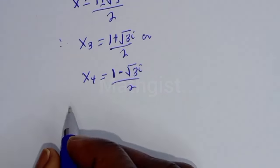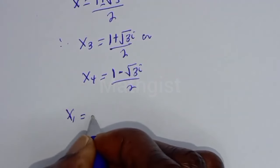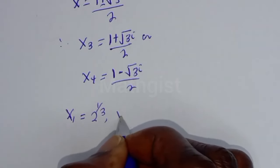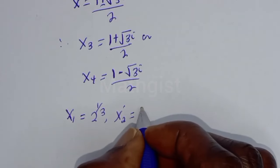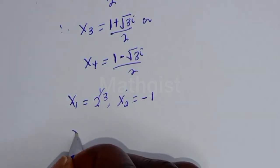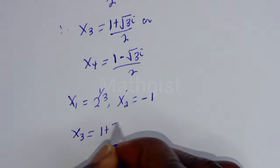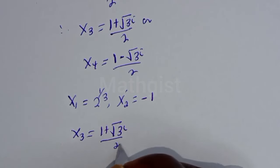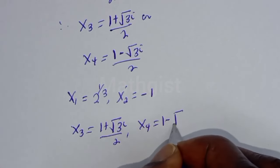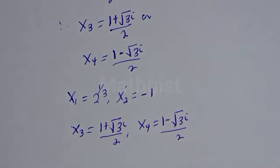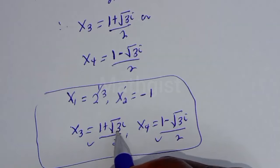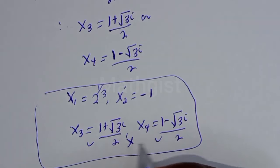So the values of s are: s1 equals 2^(1/3), s2 equals minus 1, s3 equals (1 plus root 3 i) over 2, and s4 equals (1 minus root 3 i) over 2. However, s3 and s4 are imaginary solutions, so we don't want these. The only real solutions are s1 and s2.